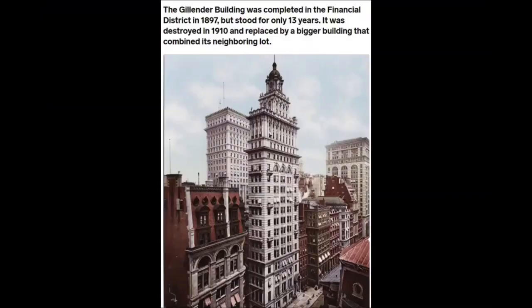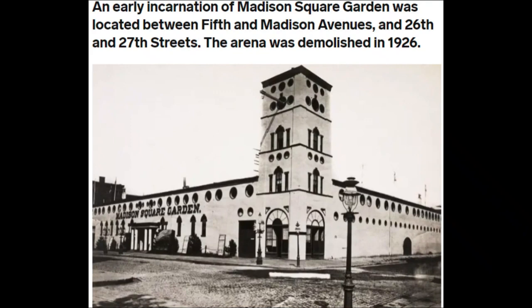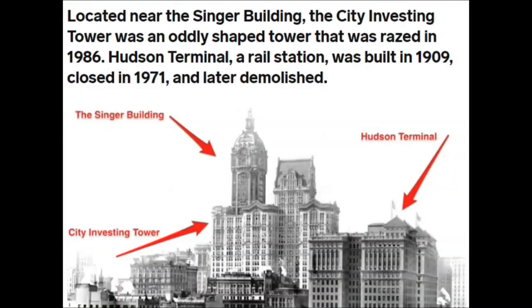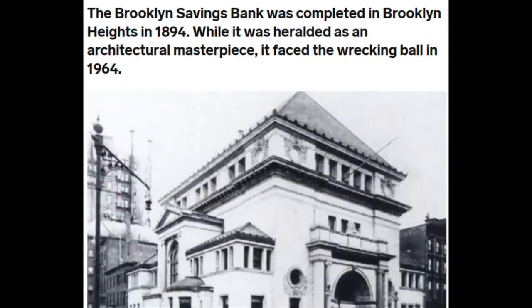Here are a few of many examples of demolished monumental architecture in New York City alone: the Galender Building, said to have been completed in 1897 and destroyed in 1910, only 13 years later. A version of Madison Square Garden without a completion date was demolished in 1926. The historic Hotel Astor stood for only 63 years, between 1904 and 1967, before being demolished and replaced by a high-rise. The Singer Building was completed in 1908 and demolished in 1968, along with the City Investing Tower that same year and the Hudson Terminal Rail Station, demolished after closing in 1971. And the Brooklyn Savings Bank, completed in 1894 and demolished in 1964.